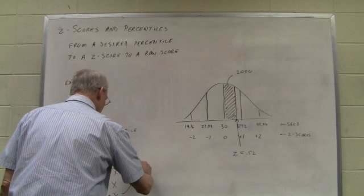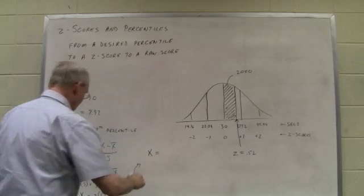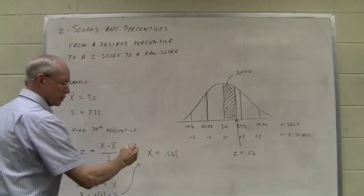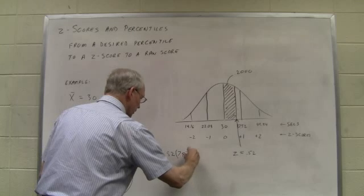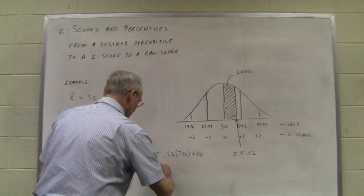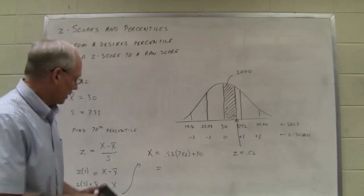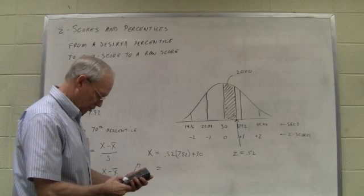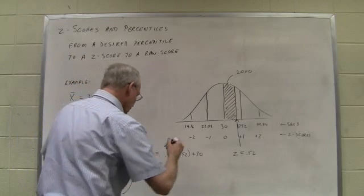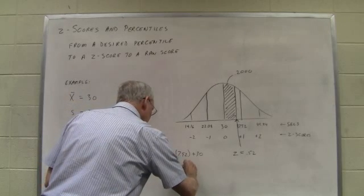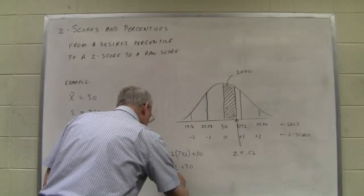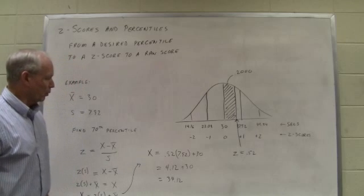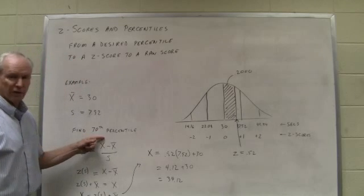So that is 0.52. We are going to multiply our z-value of 0.52 times the standard deviation 7.92, add the mean, which is 30, and we get 0.52 times 7.92, that's 4.12, and what that tells us is that a raw score of 34.12 corresponds to the 70th percentile.